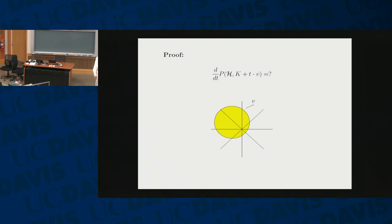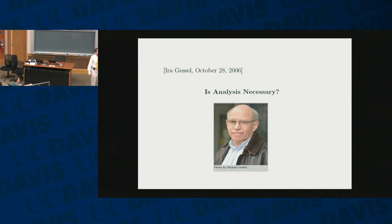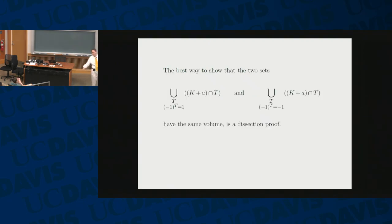How am I going to prove this result? I'm going to take the pizza, move it, and see how it changes — what's the derivative of the pizza quantity? But do we really need to use calculus? If I have two sets and I want to show they have the same volume, the best way is the dissection proof. You take one set, cut it into pieces, and rearrange them to form the other set. That's the way to prove that two sets have the same volume.